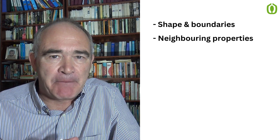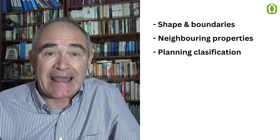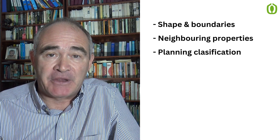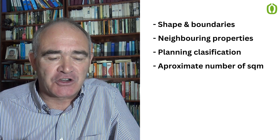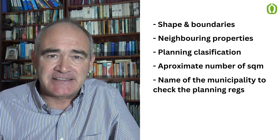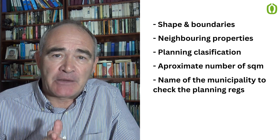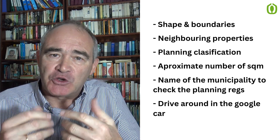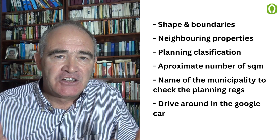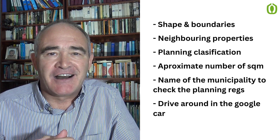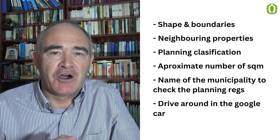So you can see that we've gained a lot of very useful information from this exercise. We've been able to check out the shape of the property and the boundaries, look at the neighboring properties and their boundaries, we've got the planning classification, we know how many square meters are registered on the Catastro, we know which municipality to check the planning regulations with, and we've been able to coordinate with Google to see the aerial photograph and drive around in the Street View car — all of this without leaving your home.